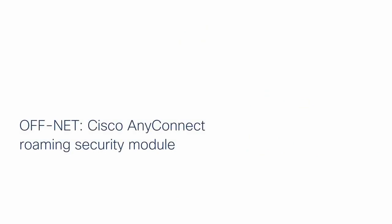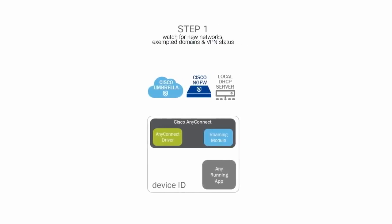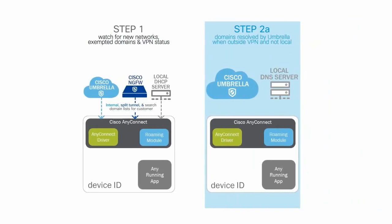The last scenario is for off-network protection with the Cisco AnyConnect client. If your customer already uses Cisco AnyConnect, they can simply enable a module on the AnyConnect agent and get protection from Umbrella even when the VPN is off. The first step is to point all DNS requests from any running app to 127.0.0.1, which is every device's home IP address, using built-in OS operational parameters. The client also learns from your Umbrella account which domain names are internal and should not be resolved off-network.